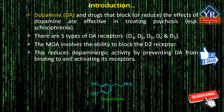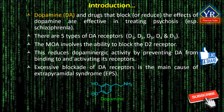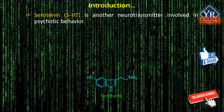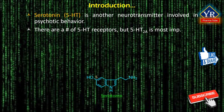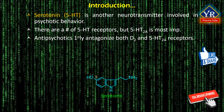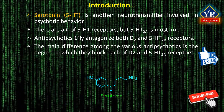This reduces dopaminergic activity by preventing dopamine from binding to and activating its receptors. Excessive blockade of dopamine receptors is the main cause of extrapyramidal syndrome, abbreviated EPS. Serotonin, also known as 5-hydroxytryptamine, is another brain neurotransmitter involved in psychotic behavior. There are a number of different 5-hydroxytryptamine receptors, but the receptor identified as 5-HT2A is the most important for antipsychotic effects. Antipsychotic drugs primarily antagonize both D2 and 5-HT2A receptors. The main difference among the various antipsychotic drug classes is the degree to which they block each of these two neurotransmitter receptors.